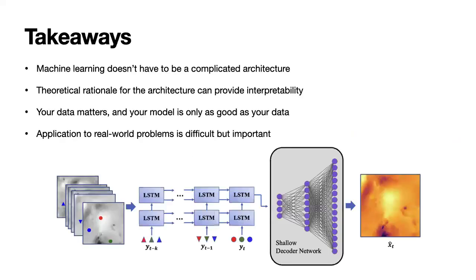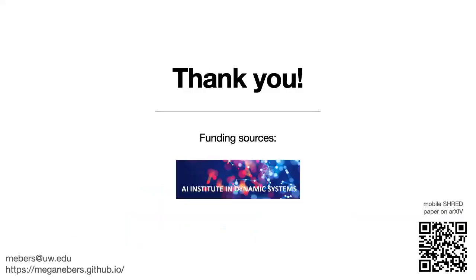A couple of takeaways I'm hoping you got from this: first, machine learning doesn't always have to be complicated, but having a theoretical rationale for the architecture can improve interpretability and understanding of what we're studying. Second, your data matters and your model is only as good as the data you have. Third, application to real-world problems is really difficult but really important. With that, I'll take questions for the last couple of minutes, and thank you for listening.